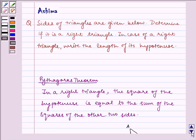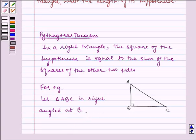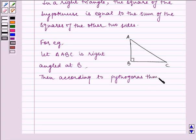For example, let triangle ABC be right angled at B. Then, according to Pythagoras theorem, AC square is equal to AB square plus BC square.